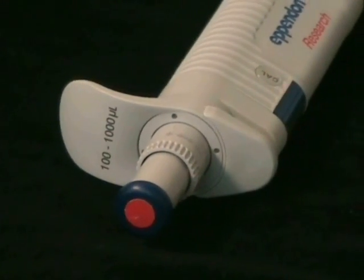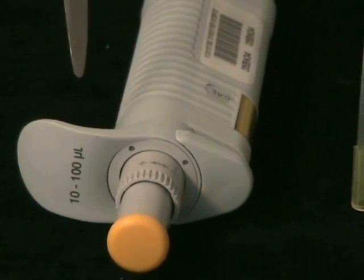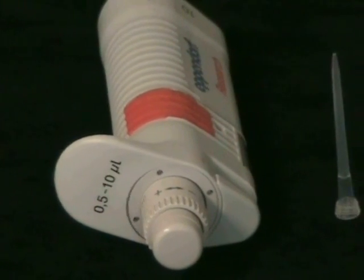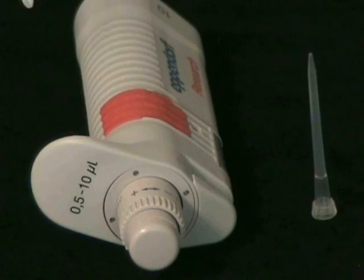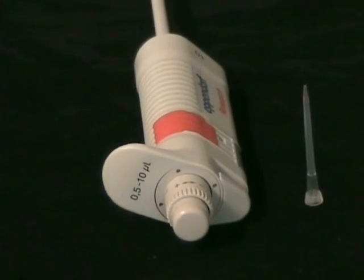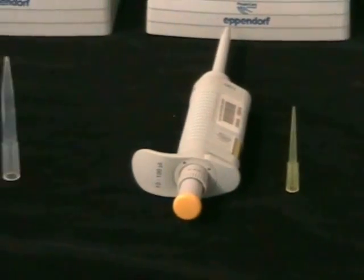At the midpoint we have the P100, which will do from 10 to 100 microliters, and at the end we have the P10, which will do from 0.5 to 10 microliters. Beside each pipette we've displayed the tips that we use. It's imperative to use the right tip, otherwise you get the wrong volume.